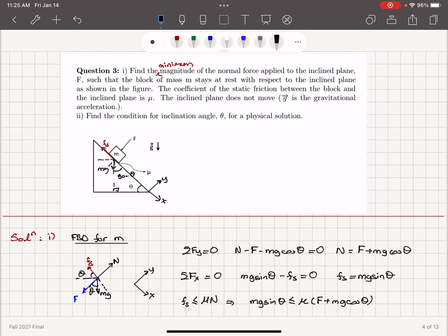Which is F plus mg cosine theta. All right, so we can basically write from this inequality that F has to be greater than mg sine theta over mu minus mg cosine theta.